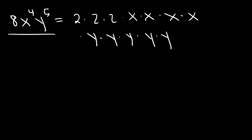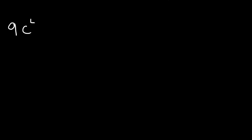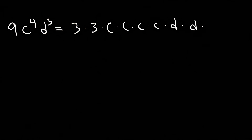Here's another example — go ahead and expand this one. We have 9c to the 4th d to the 3rd. 9 is 3 times 3. c to the 4th is c times c times c times c. d to the 3rd is d times d times d. So that's how you can expand certain monomials.